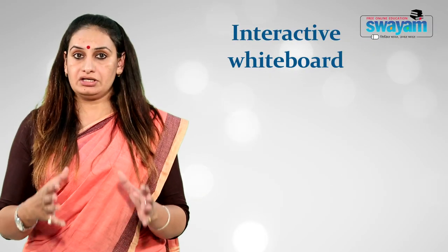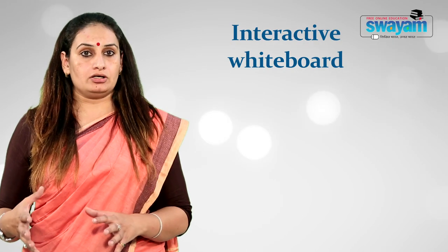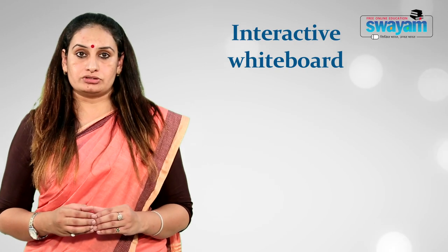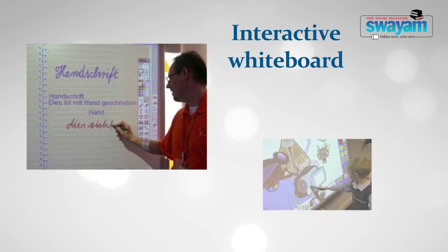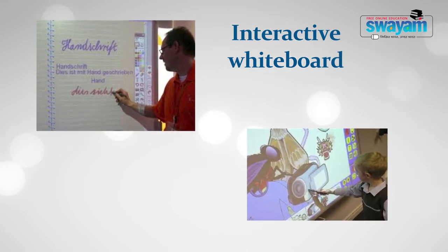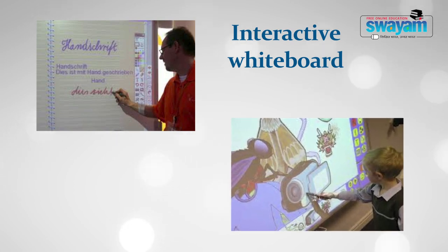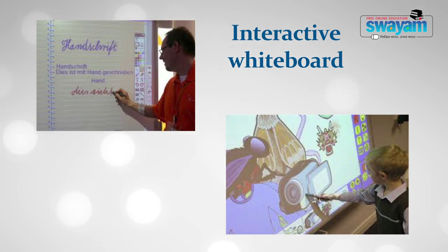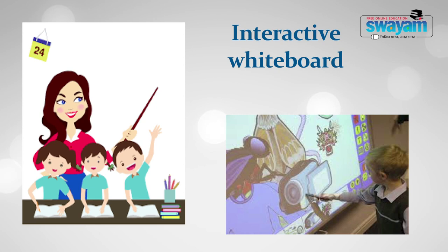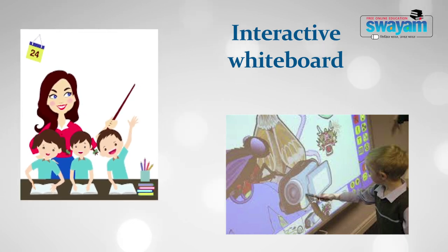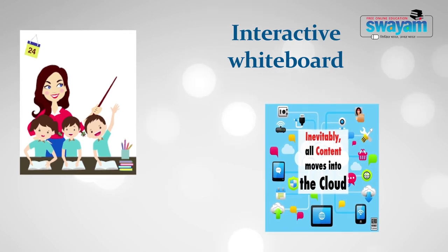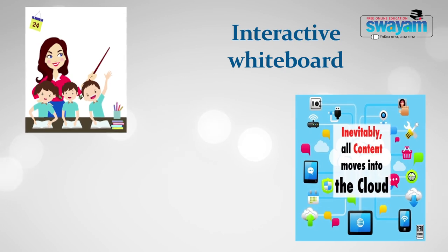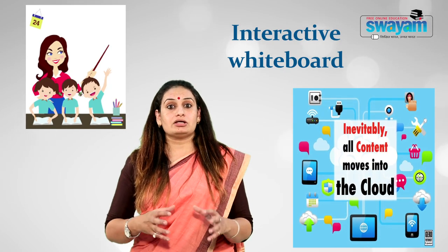Interactive whiteboards are next in the list and are one of the most popular technologies in the classroom, also known as smart boards. It is a large interactive display in the form of a whiteboard which allows users to interact with content using a finger, stylus or the board itself. A digital projector is used to display the image on the large whiteboard. With an interactive whiteboard, a teacher can take notes, annotate content and save it for later use. The teacher can also write on the board surface, which can be saved and shared as digital content.